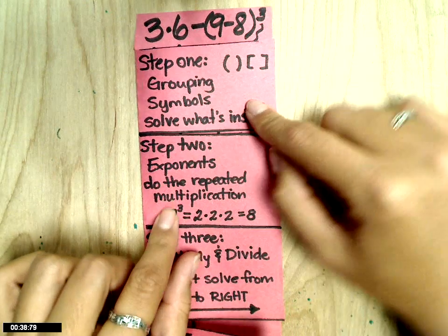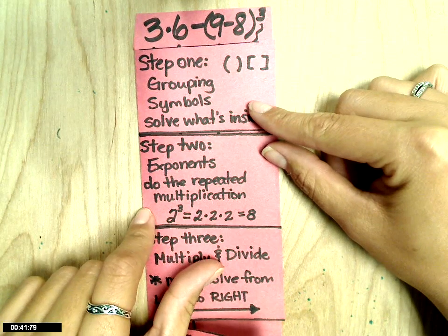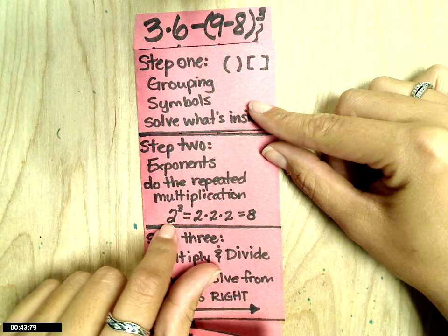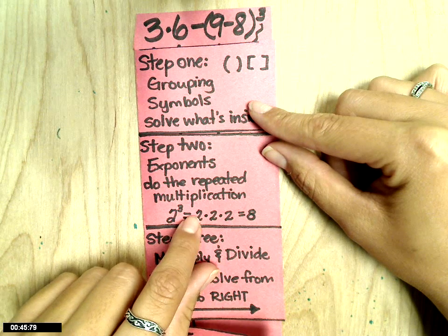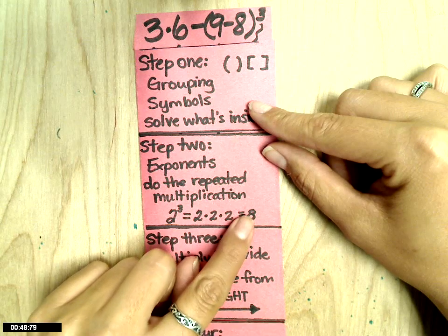Step 2 is exponents, which means doing the repeated multiplication. For example, if we had 2 to the third power, that would be 2 times 2 times 2, which gives us 8.